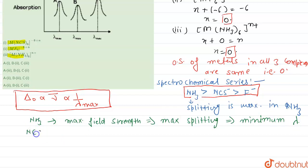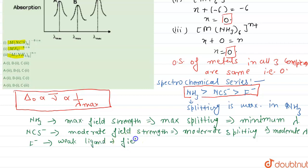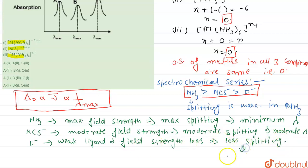In the case of thiocyanate, it has moderate field strength, therefore moderate splitting, and therefore a moderate lambda max value. In the case of fluoride ion — a weak ligand — the field strength is less, therefore less splitting, and therefore it has the maximum wavelength.